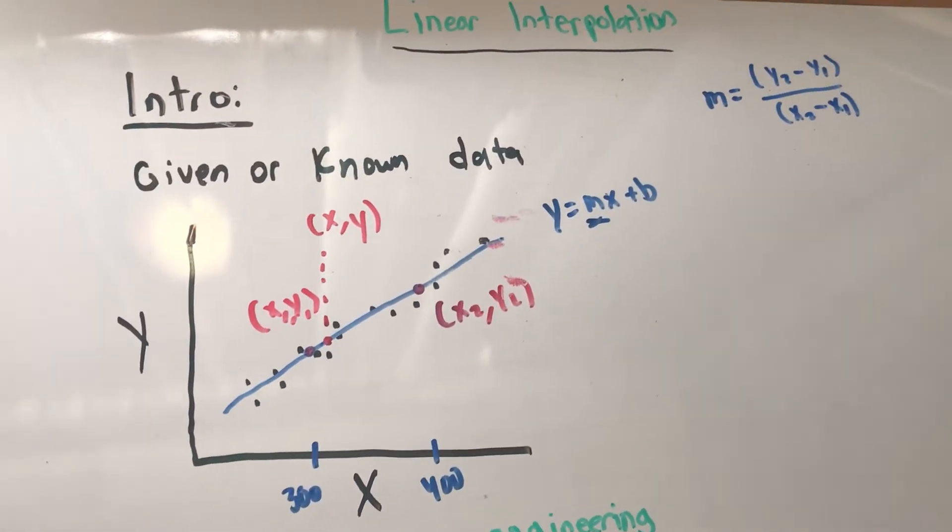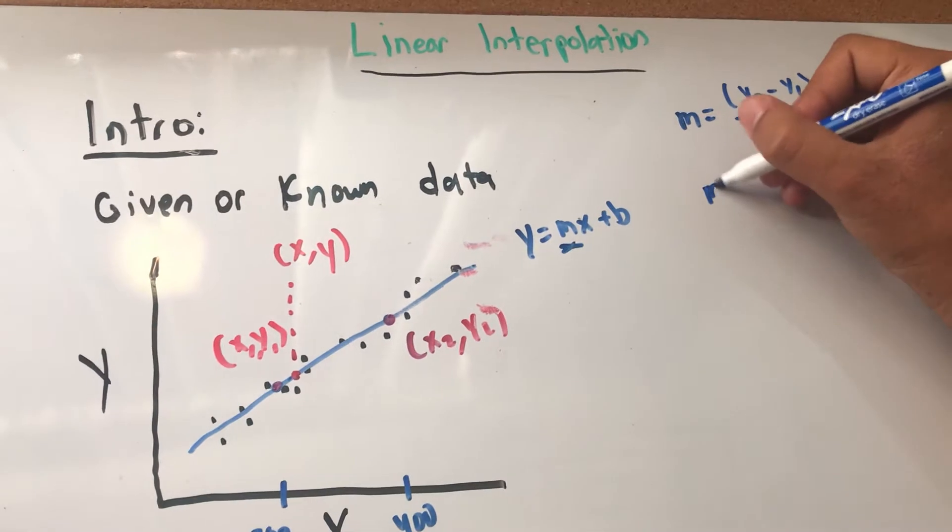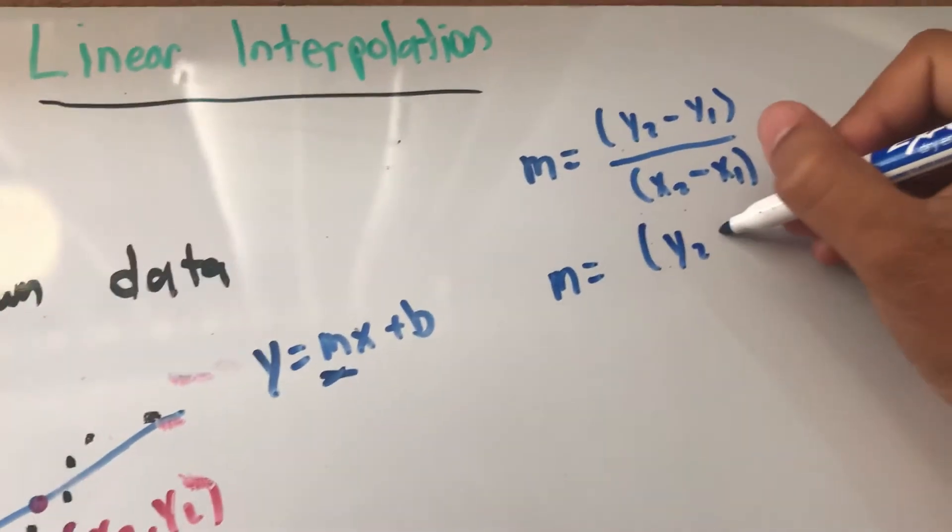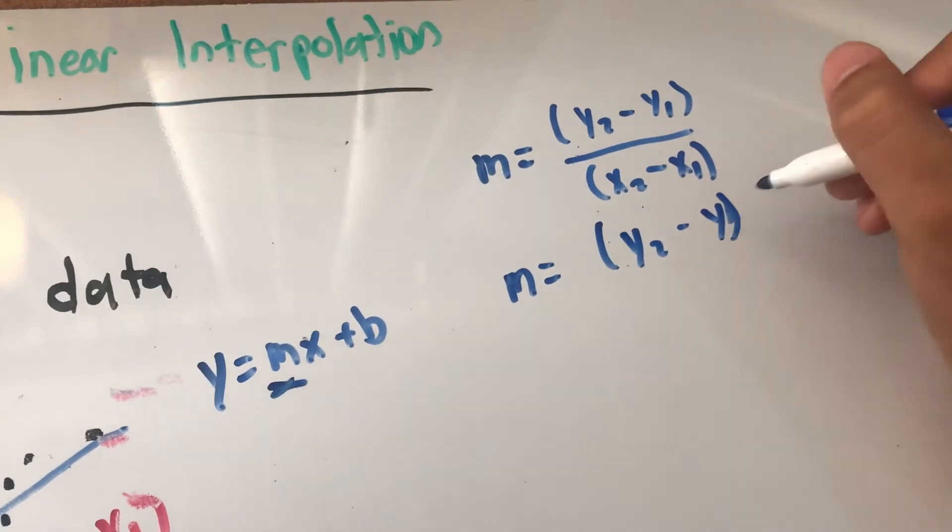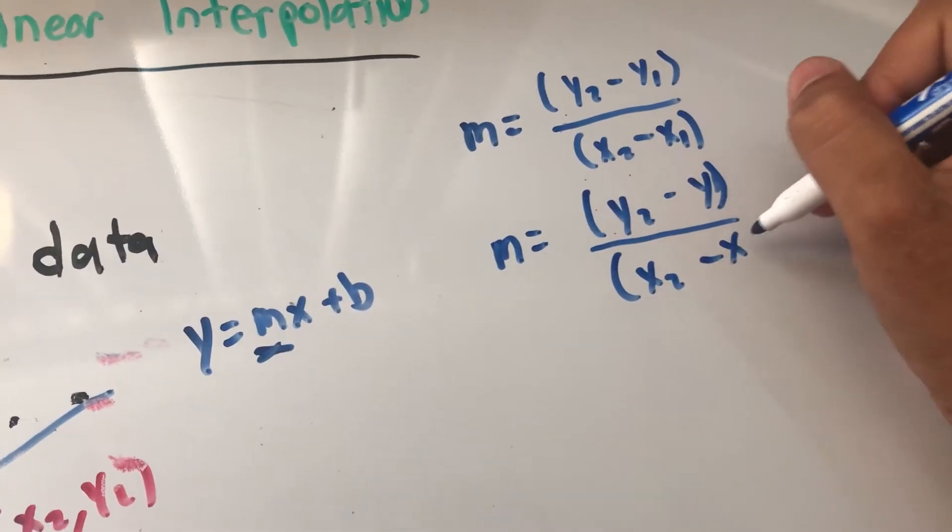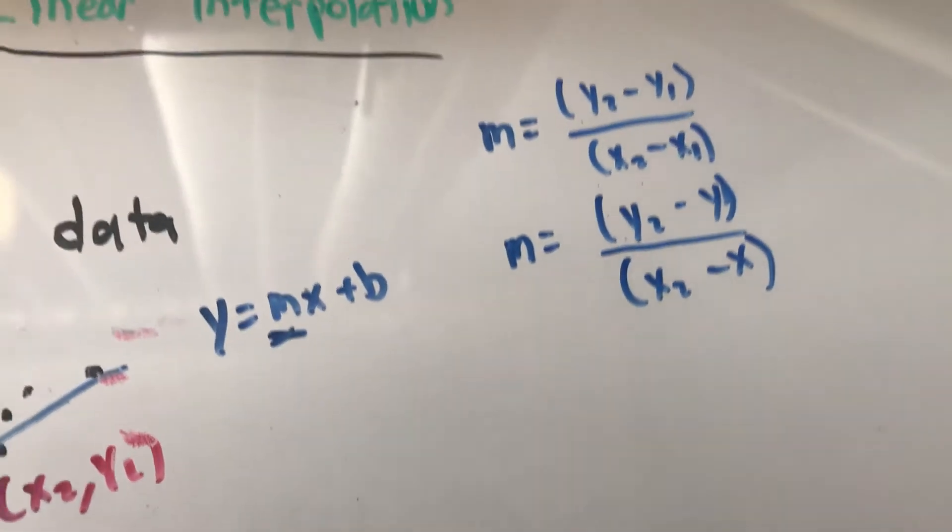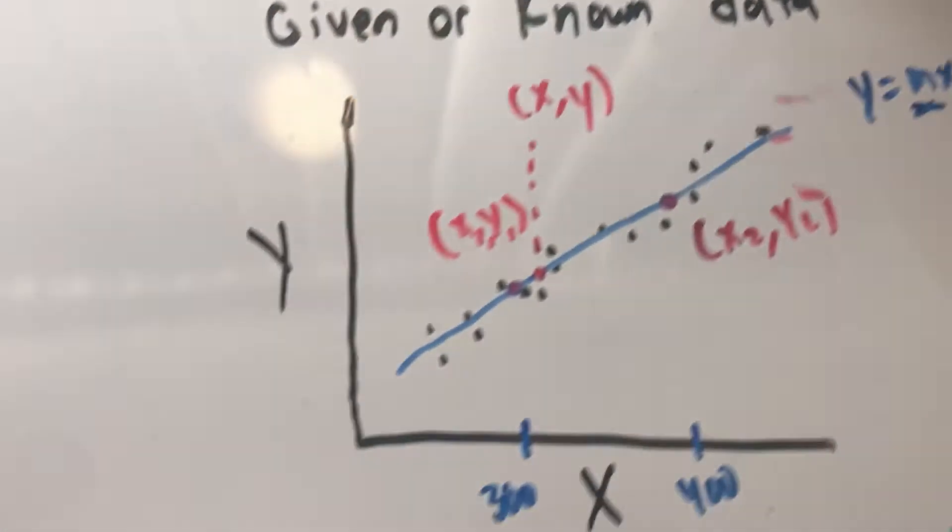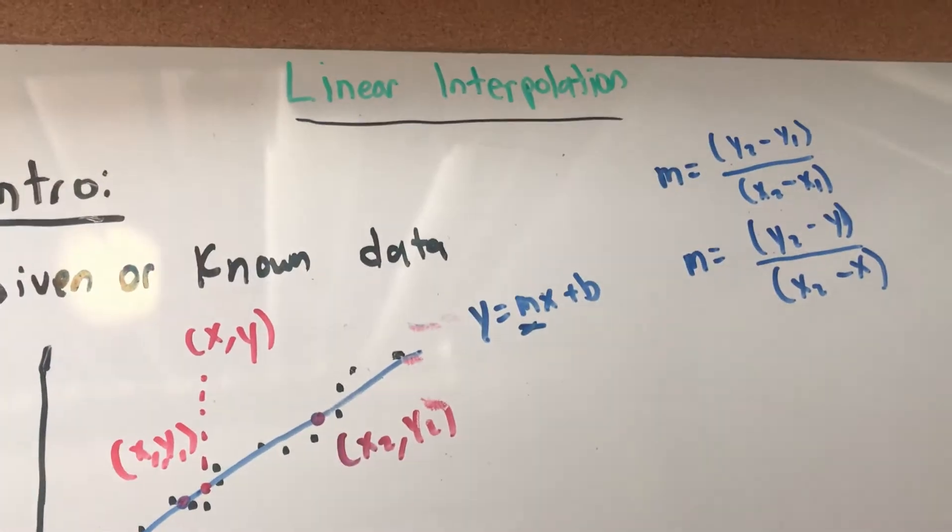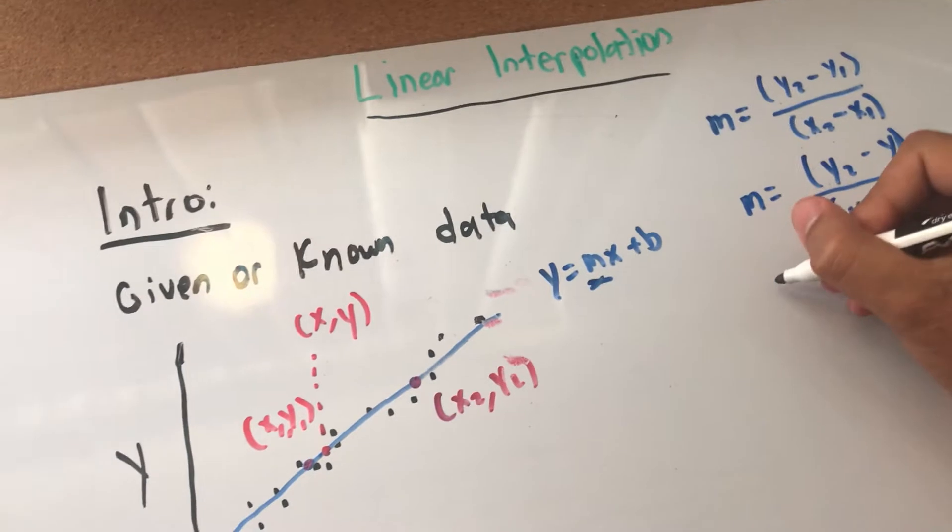And we can say that another slope is going to be y2 minus y over x2 minus x. As you noticed, since this is a line—that's why it's called linear interpolation—we can set these two slopes equal to each other.